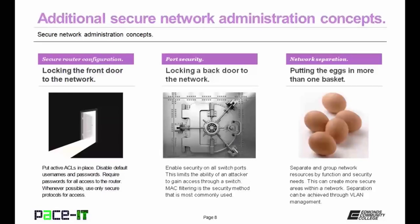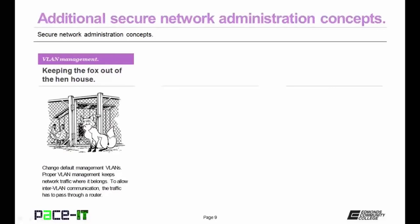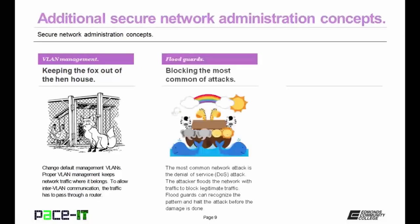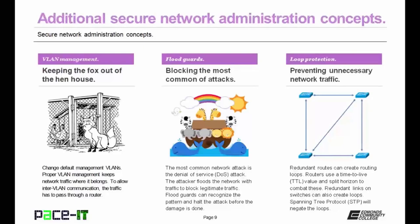Regarding VLAN management: change the default management VLAN configuration — whenever there's a default in place, you need to change it. Proper VLAN management keeps network traffic where it belongs. To allow inter-VLAN communication, the traffic has to pass through a router, taking us back to secure router configuration. Then there are flood guards — blocking the most common of attacks. The most common network attack is still the denial of service or DOS attack, where the attacker tries to flood the network with traffic to block legitimate traffic. Flood guards can recognize the pattern and halt the attack before the damage is done.